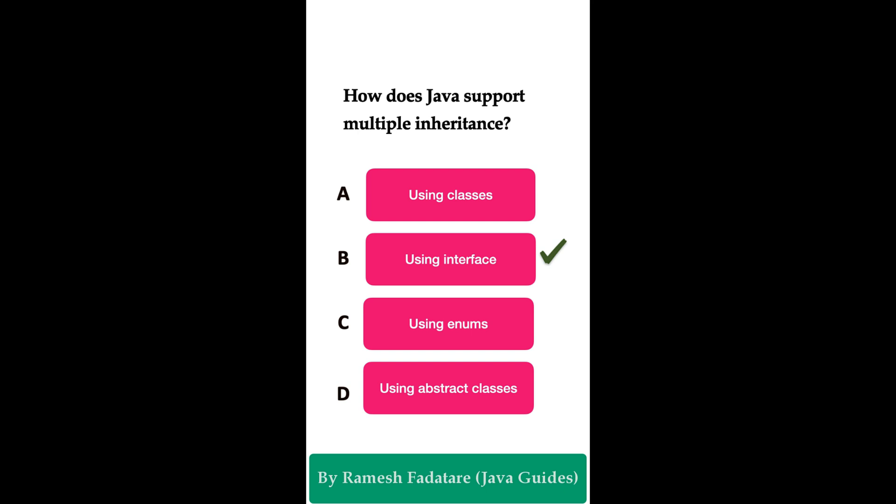Interfaces enable a form of multiple inheritance in Java. A class can implement multiple interfaces, override the methods from those multiple interfaces, and provide the implementation.